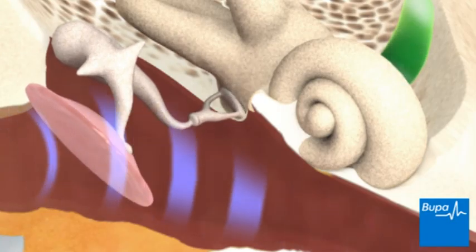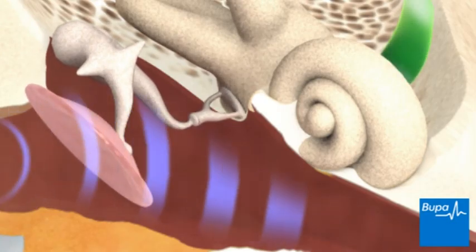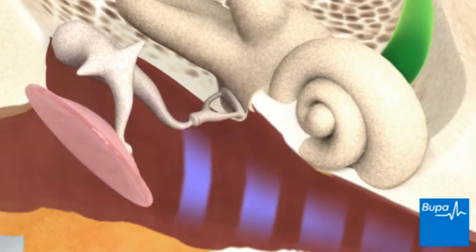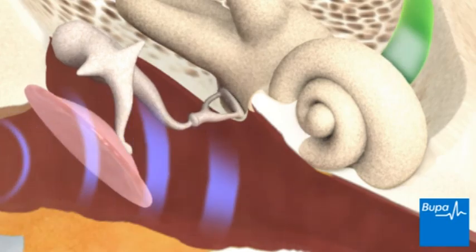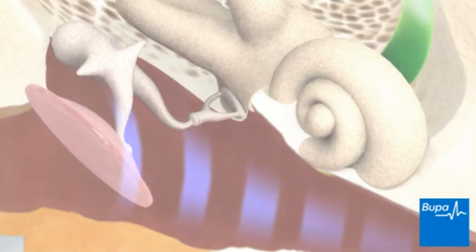Here we show the electrical signal moving through the auditory nerve. This is the end of the animation. Click on the animation screen to watch it again.